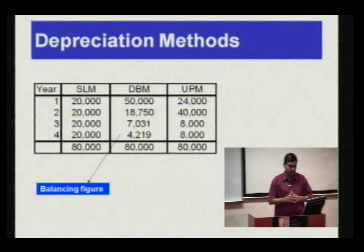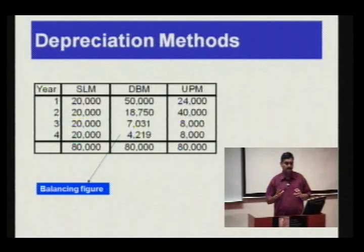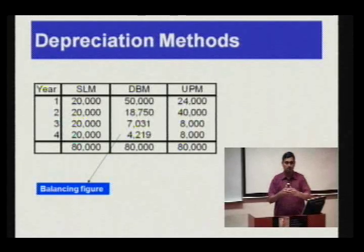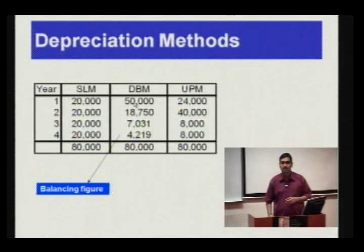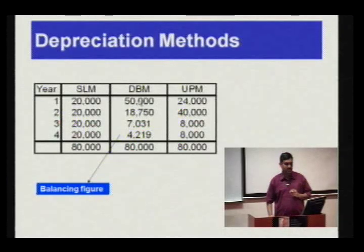From the table, you can see that all other things remaining constant, the choice of depreciation method will have a huge implication on the profit determined. For example, in the first year the depreciation under the diminishing balance method is the maximum, so all other things remaining constant the profit will be lowest under this method.